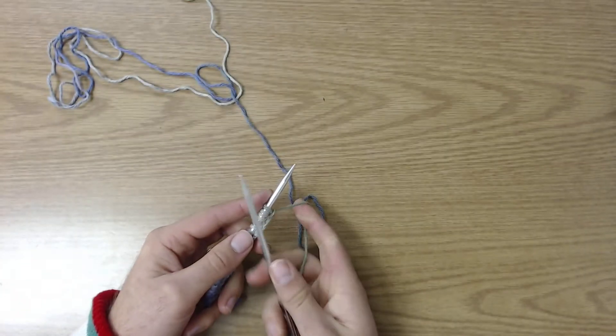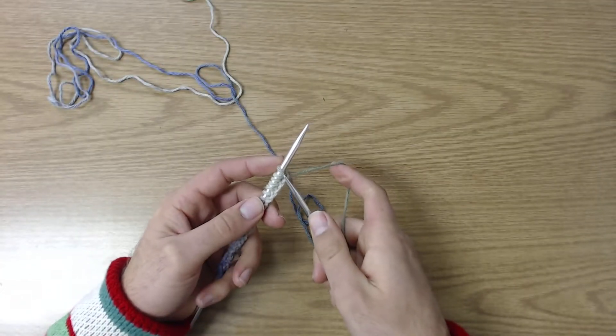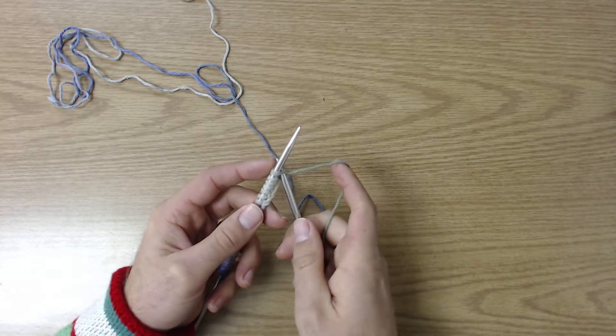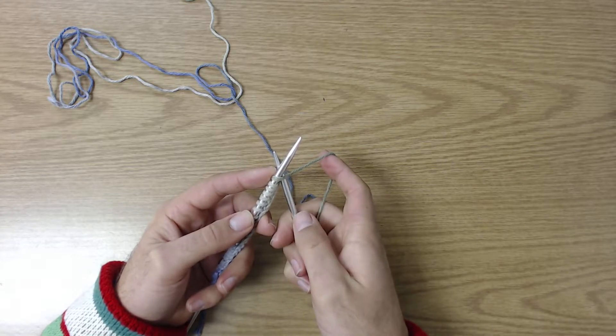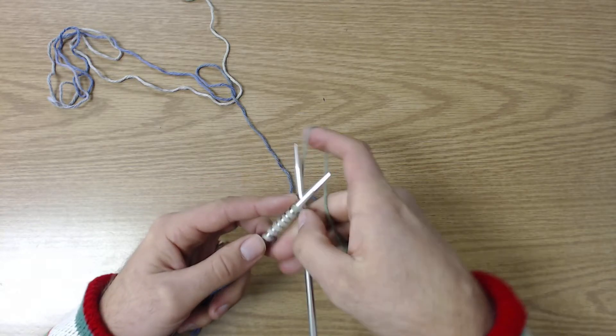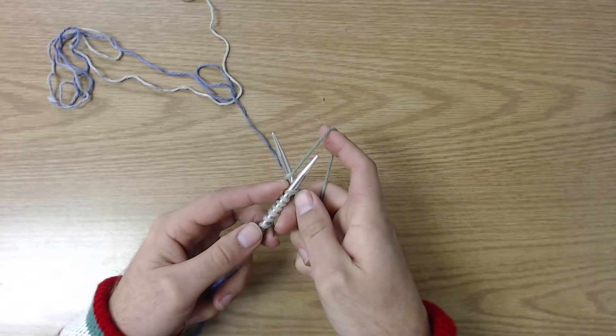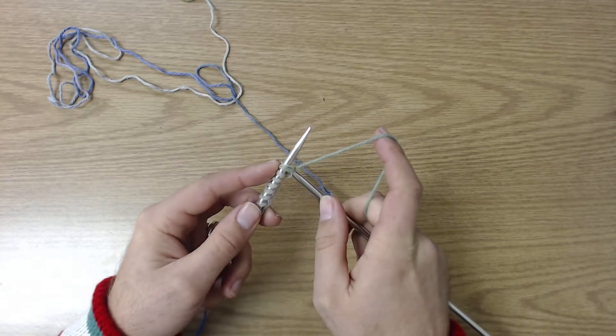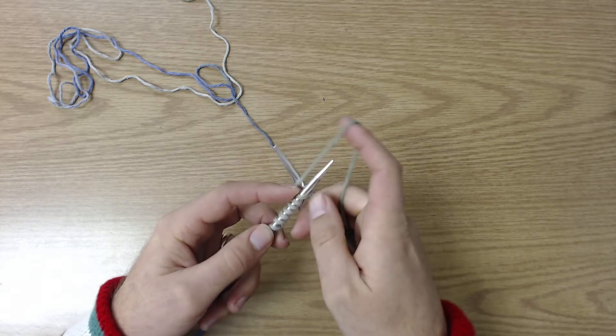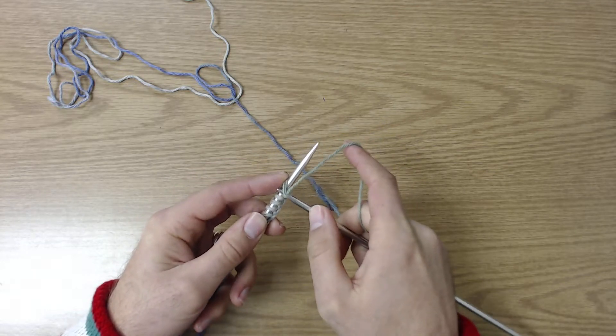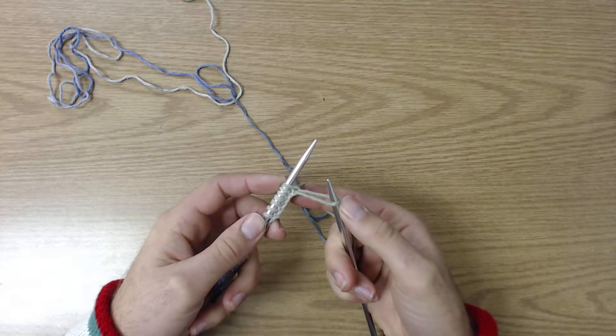So when we are making our following rows after we've cast it on, we again poke our needle through our top loop. My right needle goes behind my left needle. I yarn over or wrap my yarn around. I then use that left needle. I actually caught an extra piece of loop. So wrap our yarn around, come through.